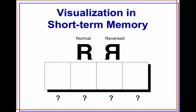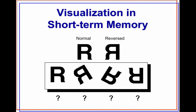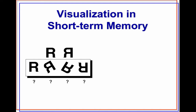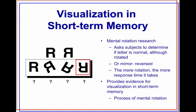What happens with visualization in short-term memory? Studies look at how people read. For example, if we're trying to match a normal R with one that's reversed — which one is the reverse? It's the last one. This study asks subjects to determine if a letter is normal but rotated, or mirror-reversed. The more the rotation, the more response time it takes. This provides evidence for visualization in short-term memory — the process of mental rotation.